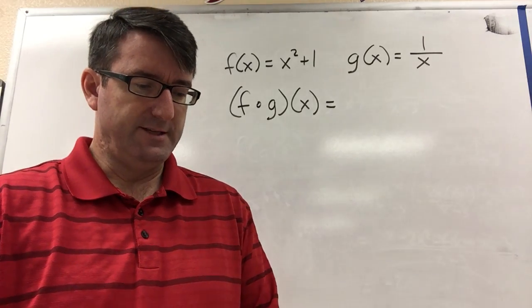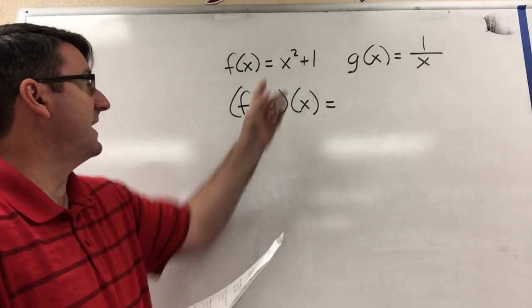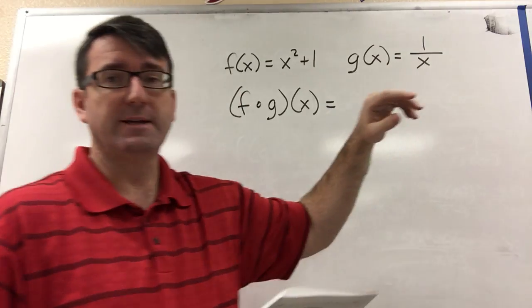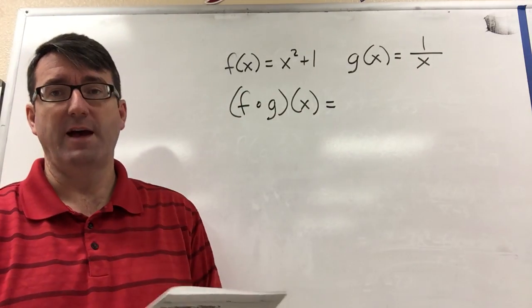All right, number 12 says, if f of x is x squared plus 1 and g of x is 1 over x, find f of g of x.